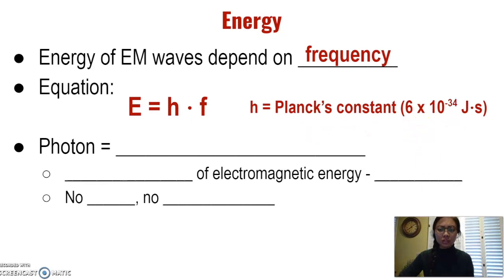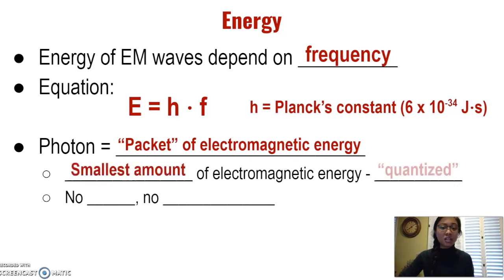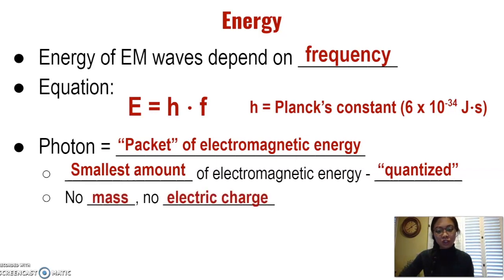Another term you may frequently encounter is photon. A photon is a packet of electromagnetic energy — the basic unit for electromagnetic energy or light. One photon is the smallest amount of electromagnetic energy that is quantifiable or quantized. Photons do not have mass and do not have electric charge. They are only a measure of the amount of energy that matter can absorb at any given time.